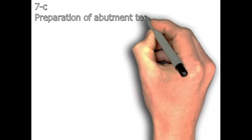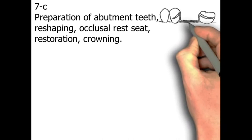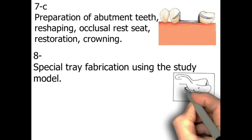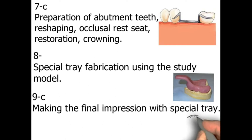Step number seven: preparation of abutment teeth, reshaping teeth, occlusal rest and seat restoration, and crowning — that's a clinical step. Step number eight: special tray fabrication using the study model. Step number nine: making the final impression with the special tray — that's a clinical step.